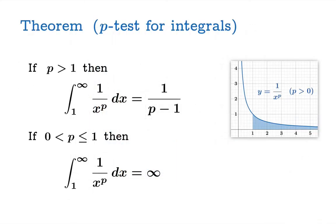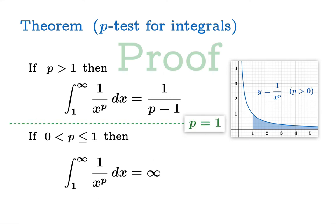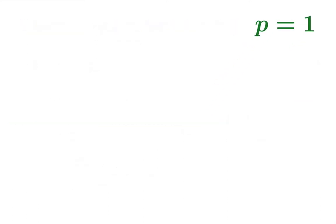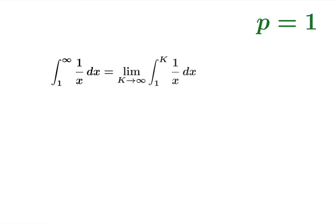So let's go back to our p-test and prove it. We'll start with the boundary case p equals 1, the dividing line between p greater than 1 and p less than or equal to 1. We can evaluate the improper integral directly pretty quickly, setting it up as a simple improper integral with one bad endpoint.